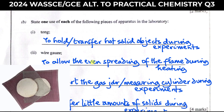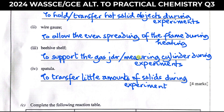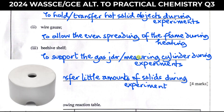If you don't use the wire gauze, the flame will concentrate at one point of the evaporating dish, which is not ideal. It could lead to the easy cracking of the evaporating dish if you continue heating one particular spot.